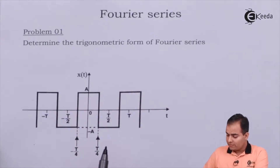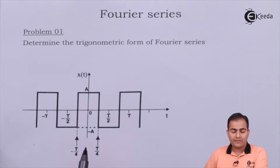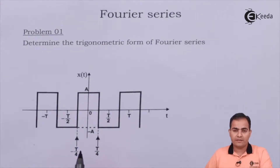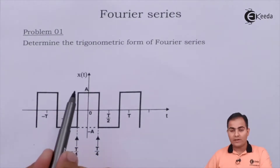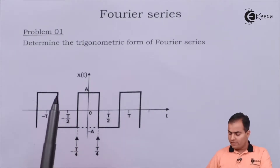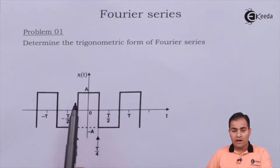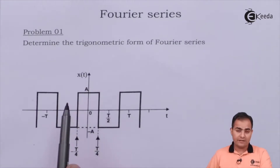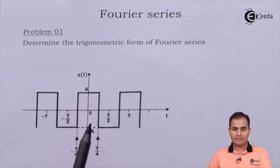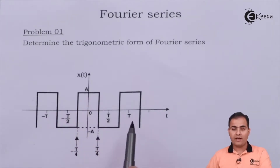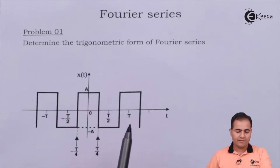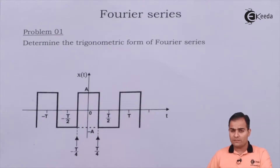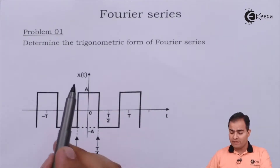Now look at the waveform. We have studied different types of symmetry: half wave symmetry, full wave symmetry, even symmetry. This function x(t) is having half wave symmetry, even symmetry, as well as quarter wave symmetry, which means the value of a₀ and bₙ is zero. So we are going to calculate only the aₙ value.